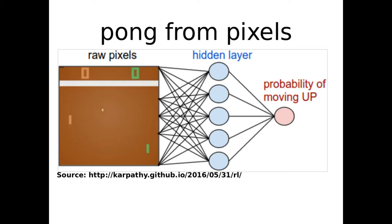In a supervised setting, training data are image frames plus a binary label for moving up or down. Therefore, we can't get better than humans since data was generated by humans. In Deep RL, the output of the neural network is used to interact with the computer game, so the algorithm can come up with action sequences no human ever thought of.